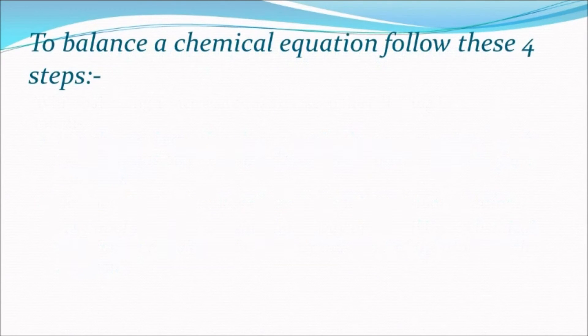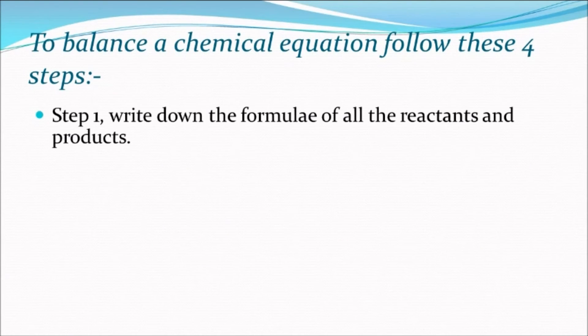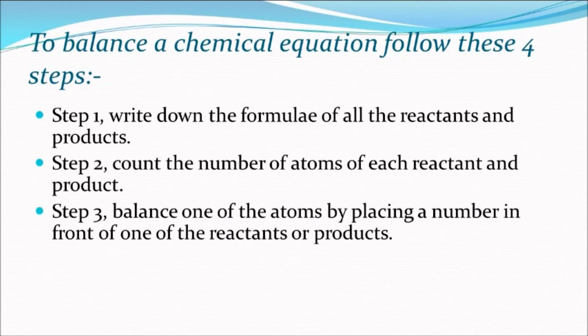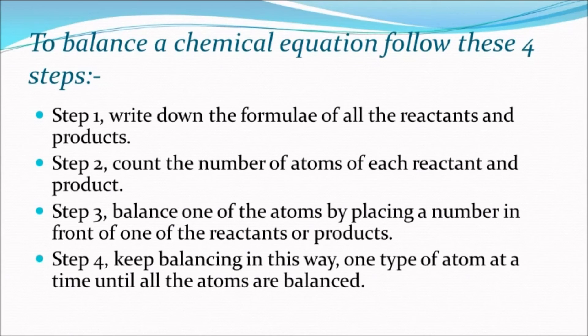In order to balance a chemical equation, you can simply follow four simple steps. Step 1: write down the formulae of all the reactants and products. Step 2: count the number of atoms of each reactant and product. Step 3: balance one of the atoms by placing a number in front of one of the reactants or products.